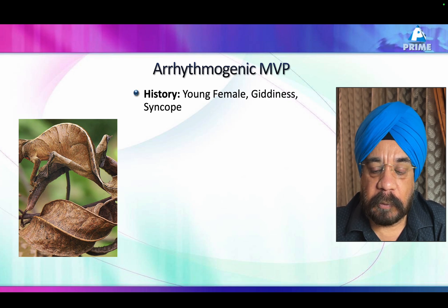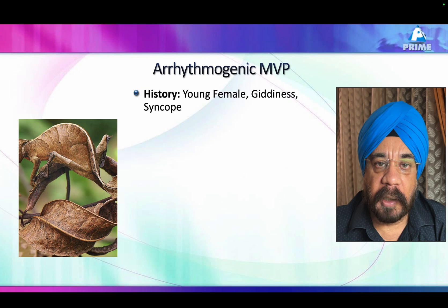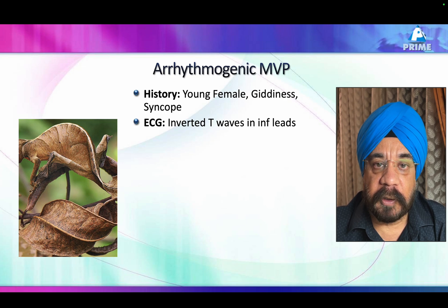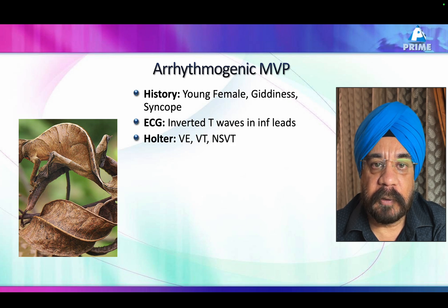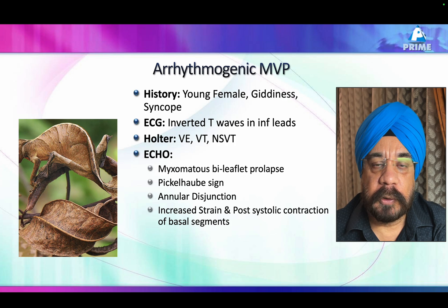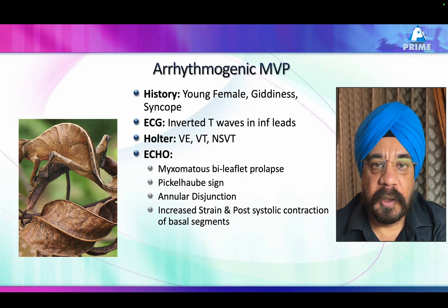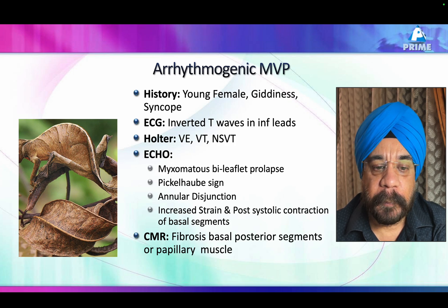You need to identify patients more likely to have arrhythmogenic mitral valve prolapse. They are generally young, with a history of syncope or giddiness. On ECG you get T-wave inversions in inferior leads. Holter monitoring shows ventricular ectopics and even ventricular tachycardia. Echo shows prolapse of the valve, the Pickelhaube sign, and annular disjunction. Strain imaging shows increased strain in basal areas. Cardiac MRI demonstrates areas of fibrosis. Together, this is the complete workup for arrhythmogenic mitral valve prolapse.